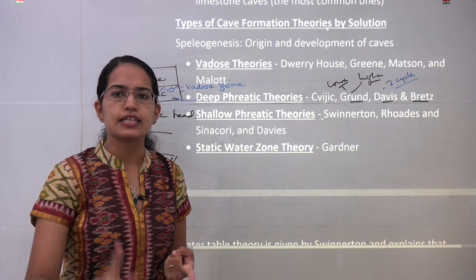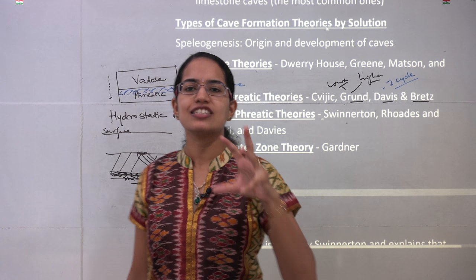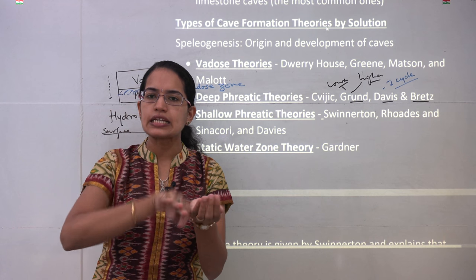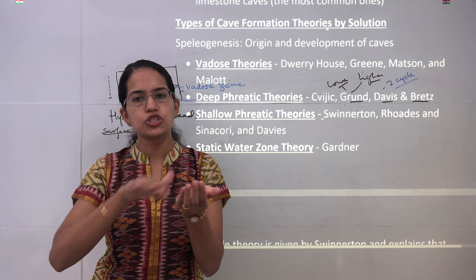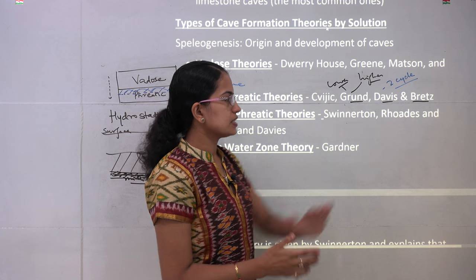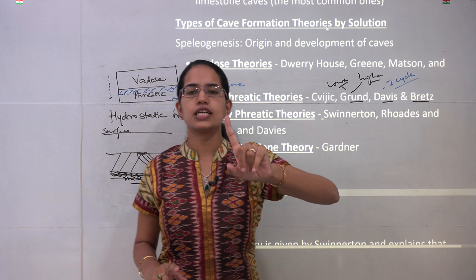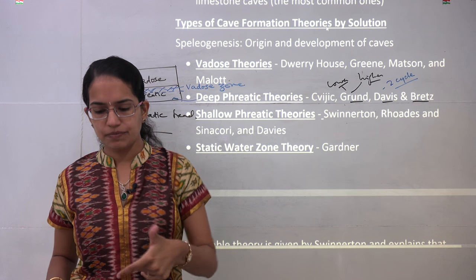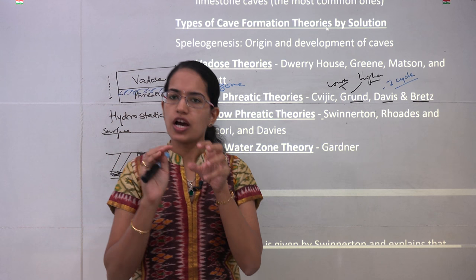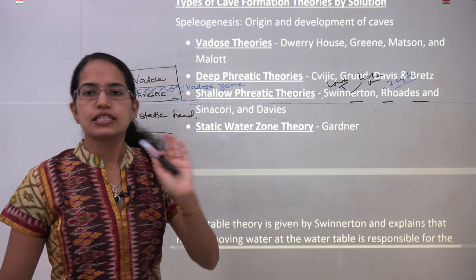Davis talked about brine replacement with fresh water. The deep phreatic theory talks about the presence of brine — salty water in the underground strata — and that salty water is being constantly replaced by fresh water. As a result it is being pushed and pushed, and so you have the cave formations that take place. The next was Bretz. Bretz tried to explain the same model as Davis but added one more stage known as an intermediate stage, under which he explained that all the flooded voids are once filled with red clay — and therefore you have the process that occurs here.